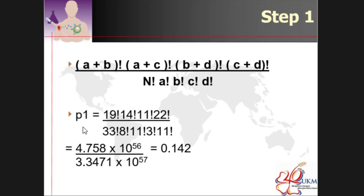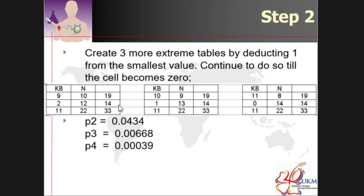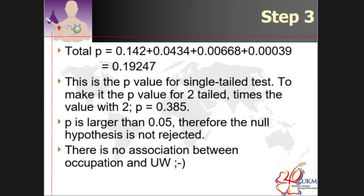So every one of this, another factorial is being done. So that's why from here, this one thing, you end up with only one value, which is probability of the first table. This one is probability for the second table, the third table and the fourth table. So the same thing you do, you put in all the value into the formula. You get the value of P2, P3 and P4. And the total of all this calculation you sum up. So sum up 0.142 plus 0.0434 plus 0.00668 plus 0.000039, you become 0.19247.